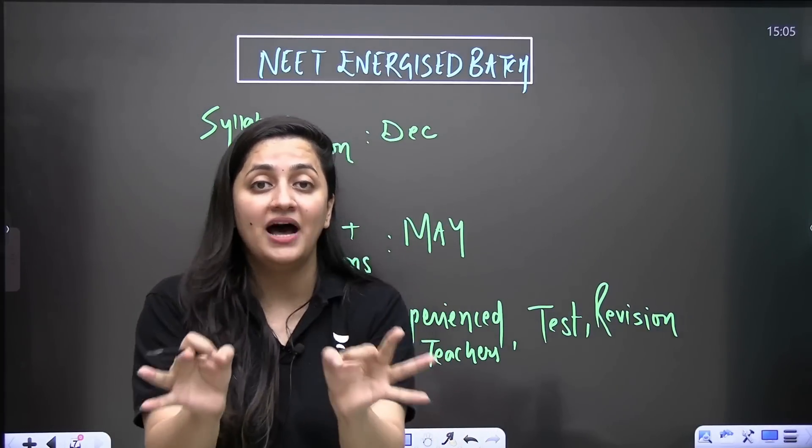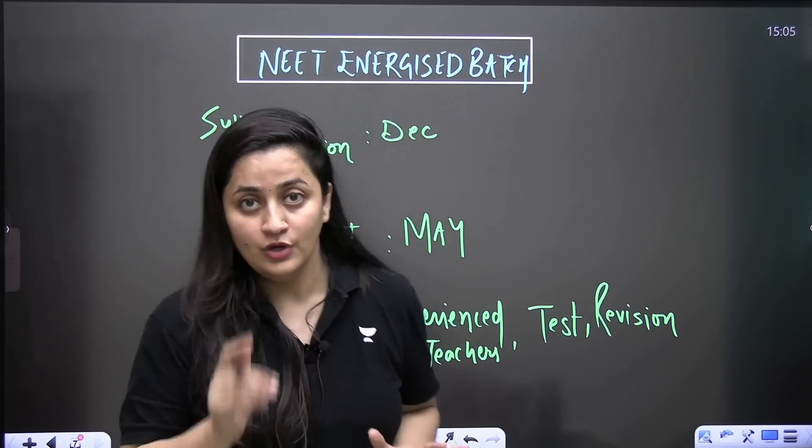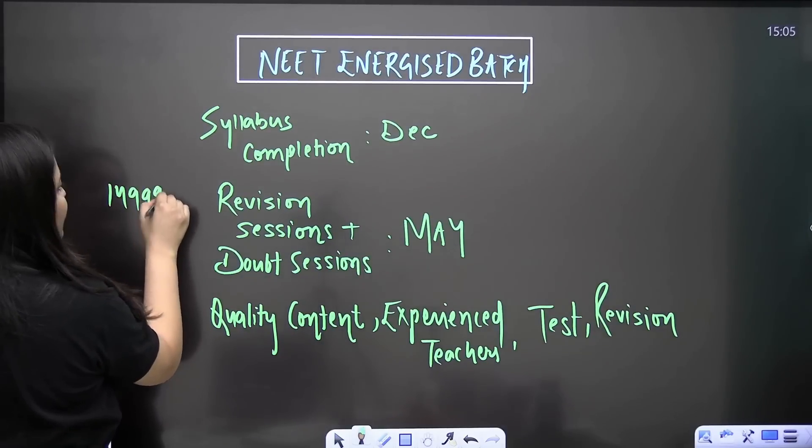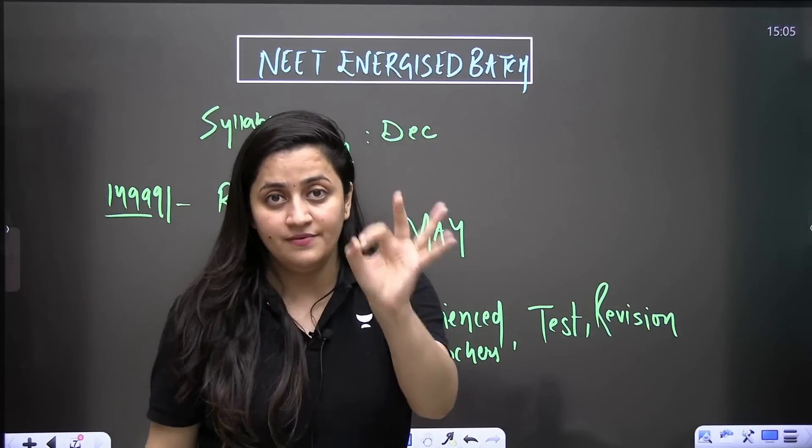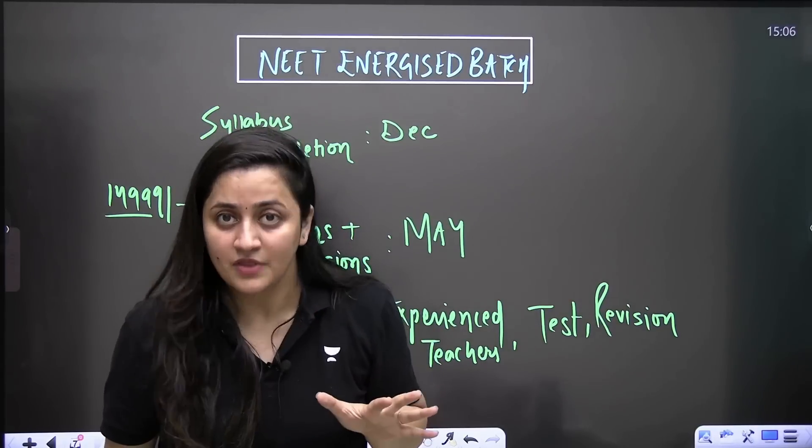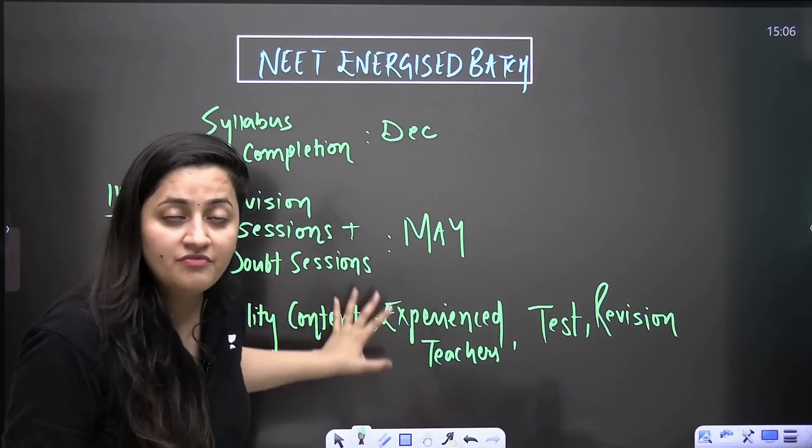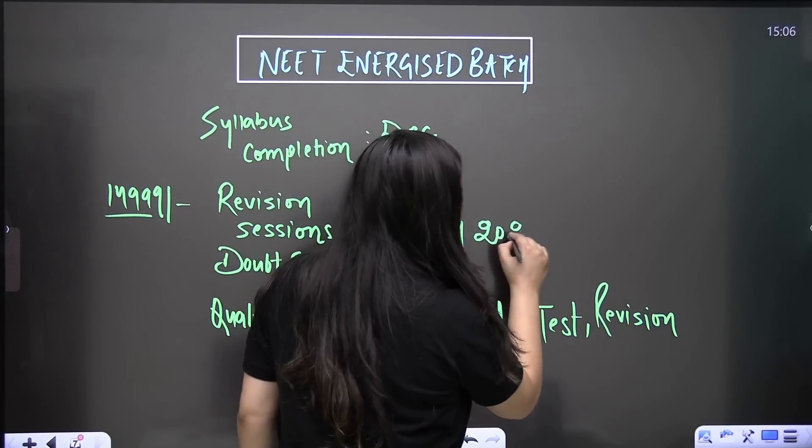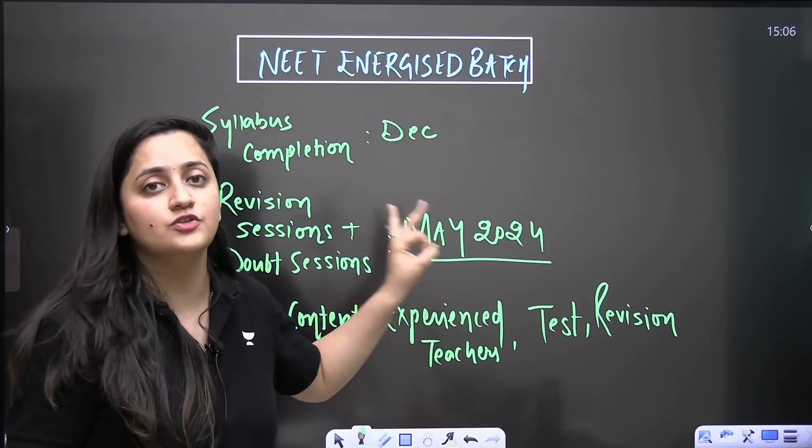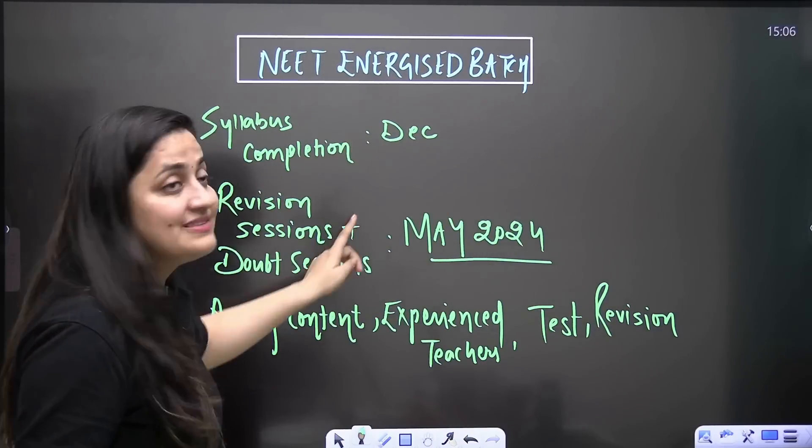You are going to get this batch at a price of 14,999. And in this price, the quality content by experienced teachers, those who know what to give you in limited time. Your 11th and 12th syllabus will be completed till December. Revision sessions will be there till May 2024. There will be proper test, proper doubt session, proper revision sessions will be provided to you, handwritten PDFs are provided to you. So this is what you are going to get in this batch.